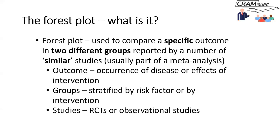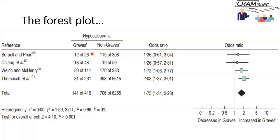Typically in a Cochrane review you will have randomized controlled trials. What you don't want to do — and most people say you shouldn't do — is combine randomized controlled trials and observational studies in the same forest plot, just as you wouldn't want to combine RCTs and observational studies in the same meta-analysis.